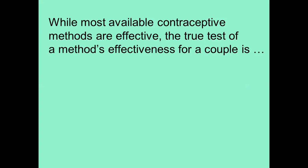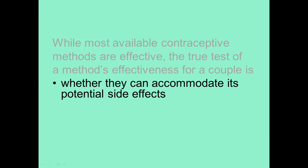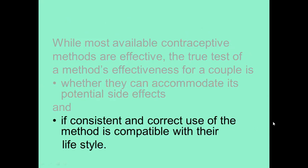One of the things you'll need to know all the way through here is what is known as the effectiveness of each method. There are two different measures of effectiveness. While most available contraceptive methods are effective, the true test of a method's effectiveness for a particular couple is whether they can accommodate the potential side effects — for example, the contraceptive injection quite often results in the female having seriously heavy menstrual periods and headaches — and whether consistent and correct use is compatible with their lifestyle.